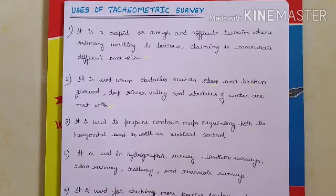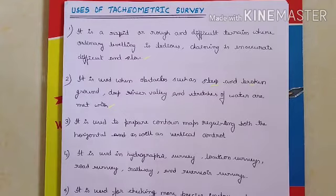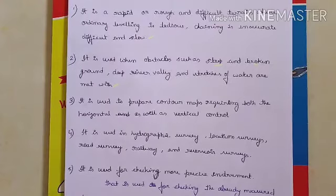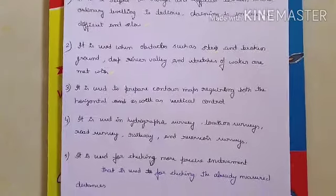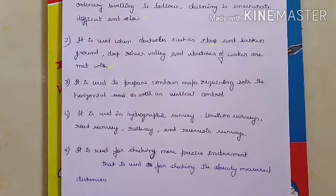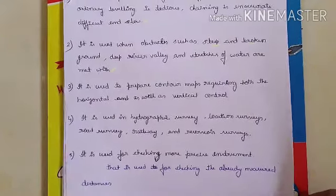It is used to prepare contour maps requiring both horizontal and vertical control. It is also used in hydrographic survey, location survey, road survey, railway survey, and reservoir survey. Additionally, it is used for checking more precise instruments — once a survey is done using a theodolite or leveling instrument, tachymetry can be used to check the already measured distances.